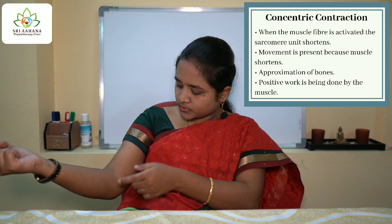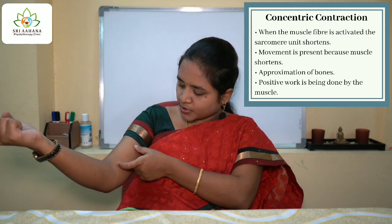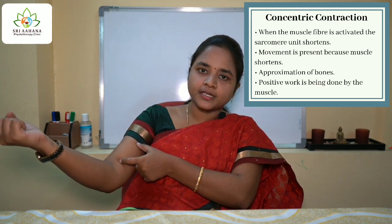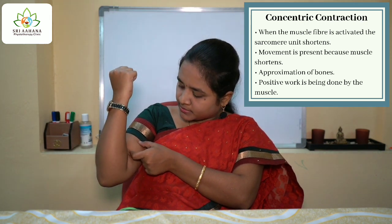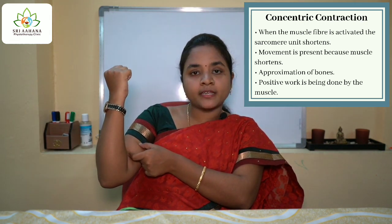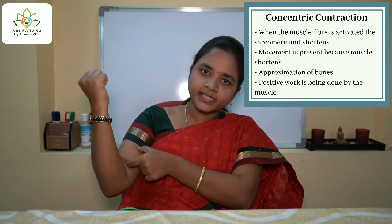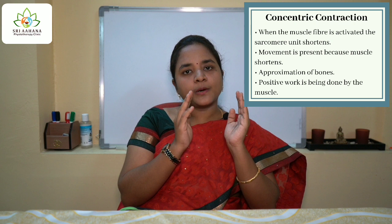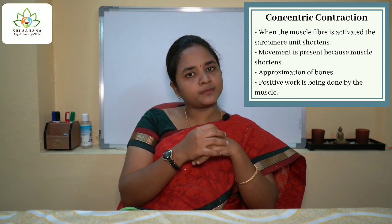For easy understanding I am placing two points A and B on my biceps. When I flex my elbow, see what happens — the distance between A and B is getting shortened, which means the muscle is shortening here. So in concentric type of contraction, a positive work is being done by the muscle.